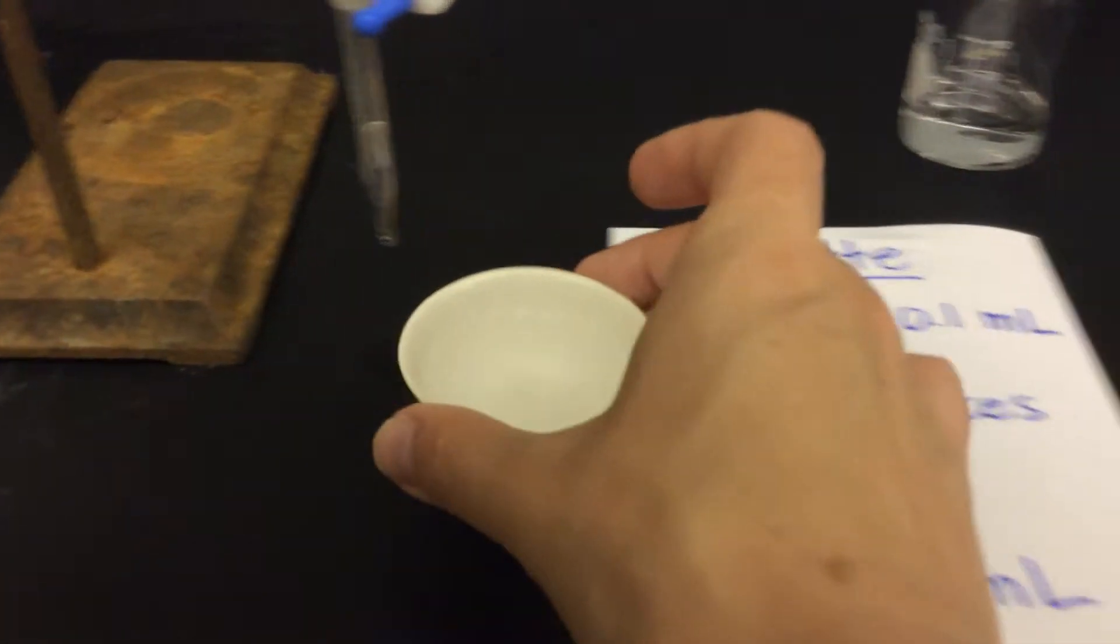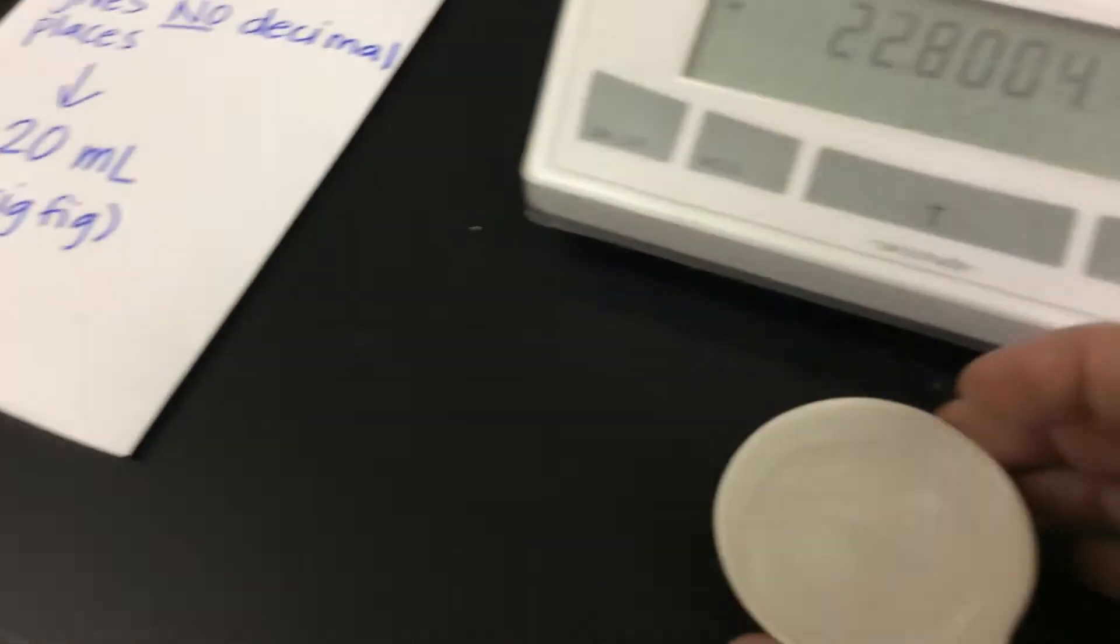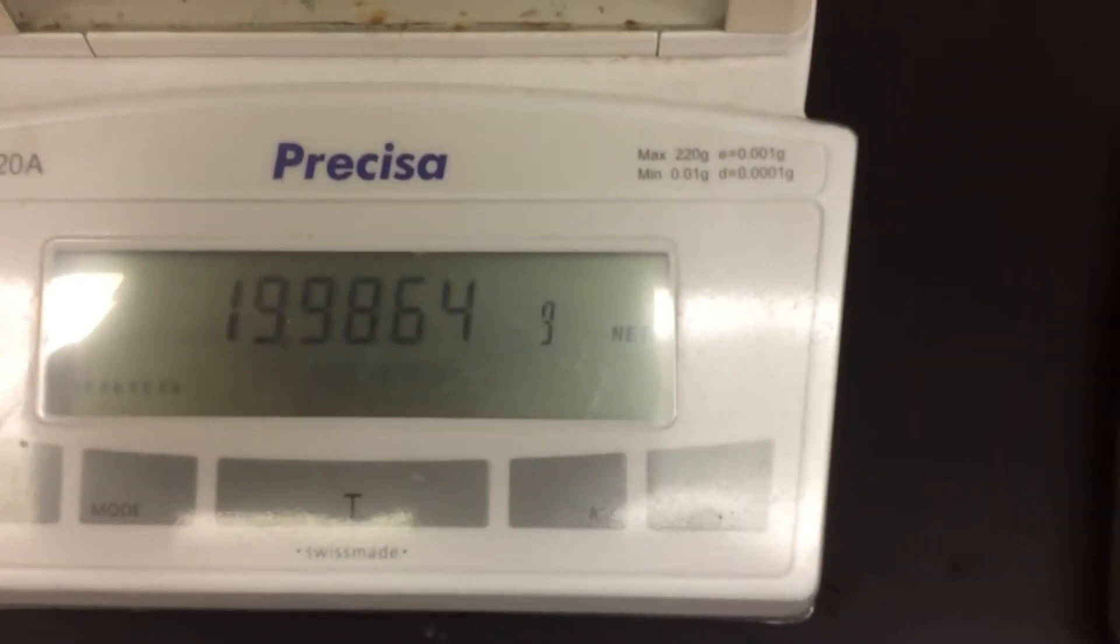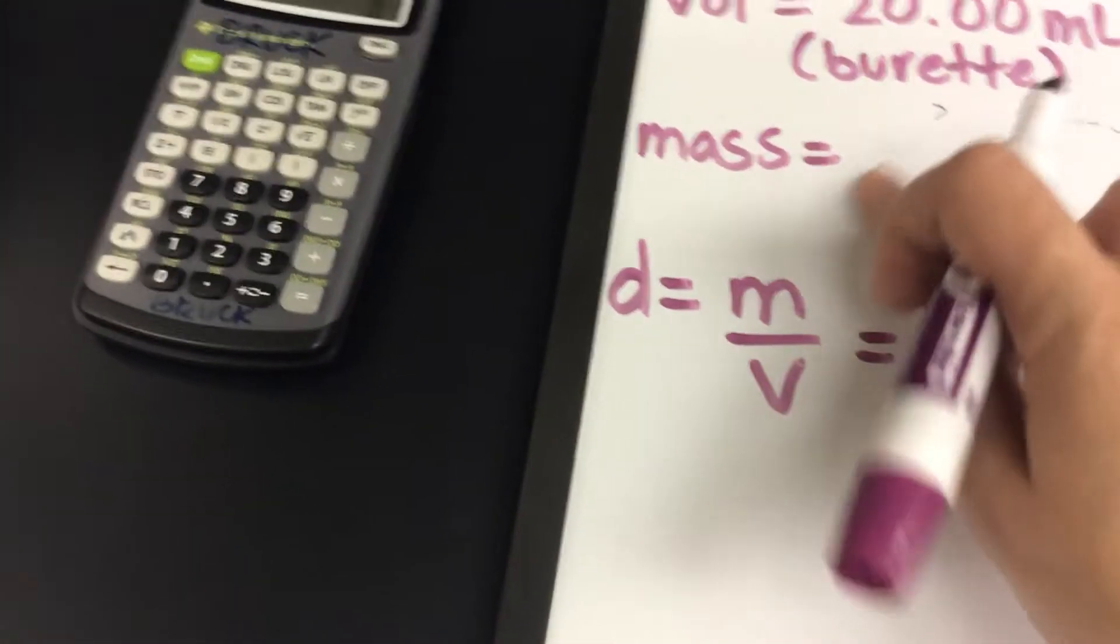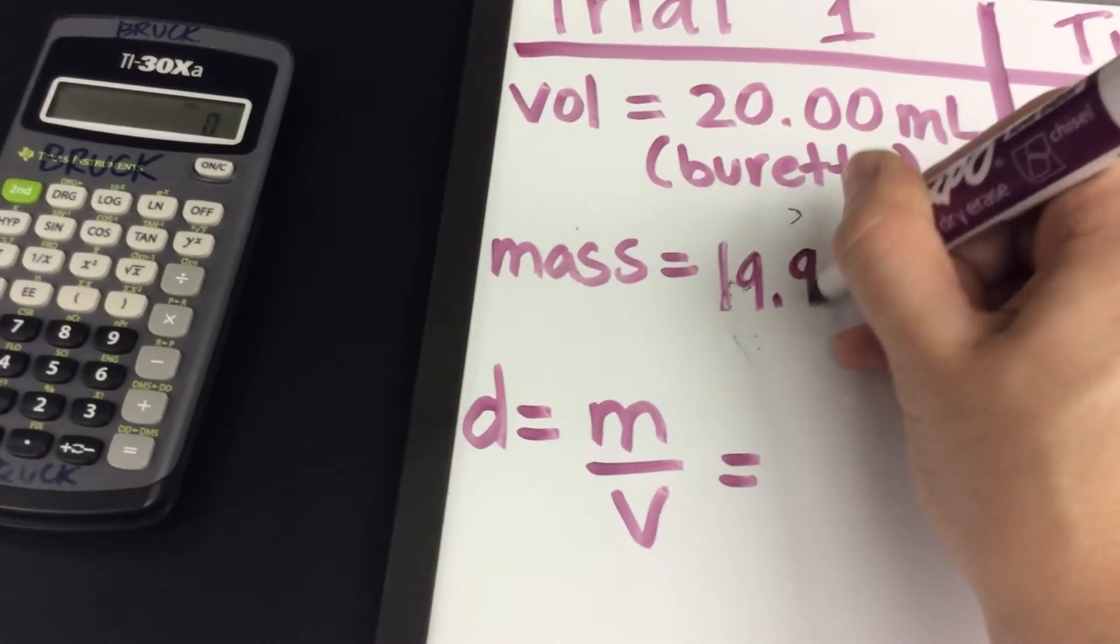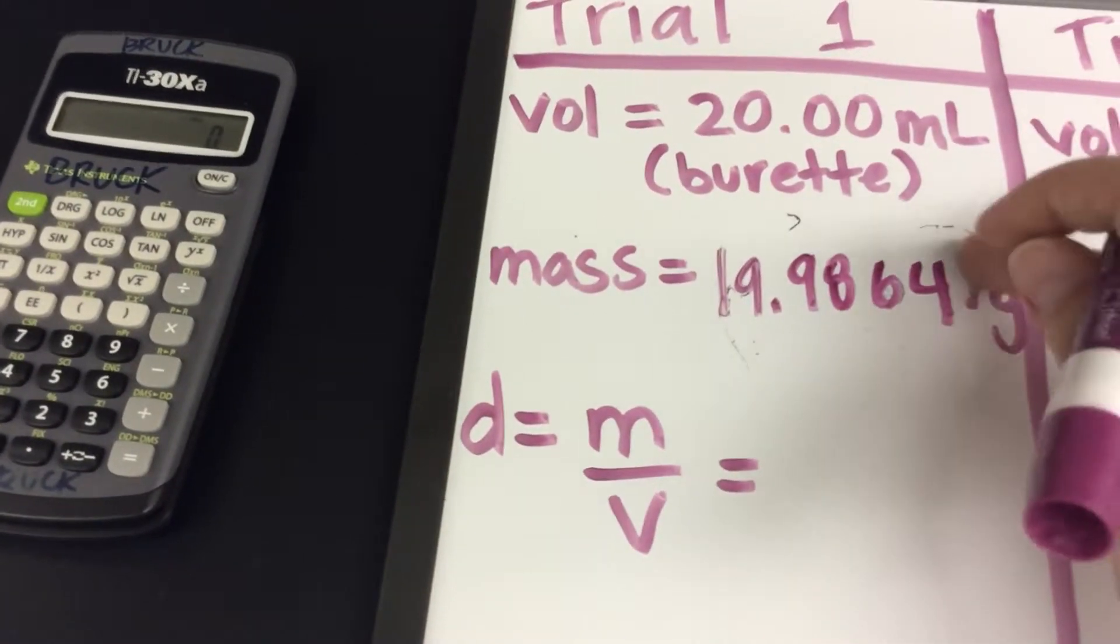Now let's record the mass. We open it. Put it in. Close the sash. There's our volume. 19.9864. 19.9864 grams.